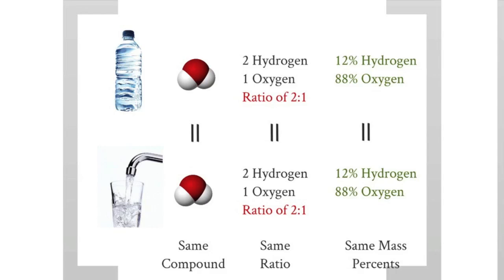That's an example of the Law of Definite Proportions. No matter where in the world you find water, it's always going to have the same compound, the same ratio, and the same percents. Water from the Atlantic Ocean is going to be 12% hydrogen and 88% oxygen. If you go all the way to the Pacific Ocean, water is going to be 12% hydrogen and 88% oxygen. That is the Law of Definite Proportions.